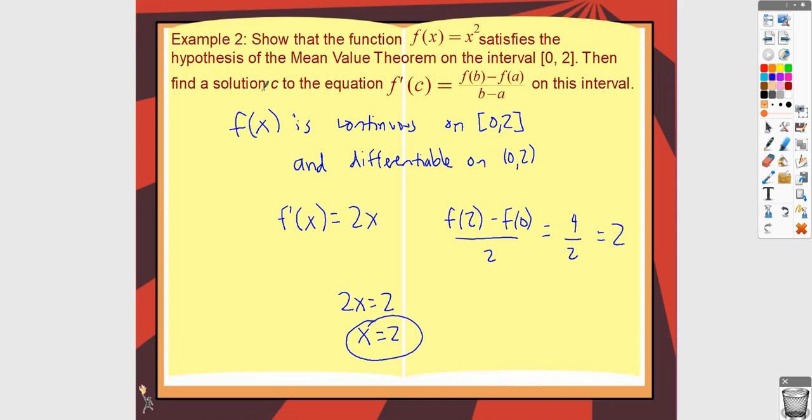Now the question does say to find a solution c. So I wanted to show it to you in terms of x just because I found the derivative in terms of x. But in general, you want to be careful with your variables. Because if x is used for something else, then you just want to be careful with the variables. So really what it probably should be is 2c equals 2, so c equals 1. That's not something you lose points for, but you do just want to be really careful with your variables.